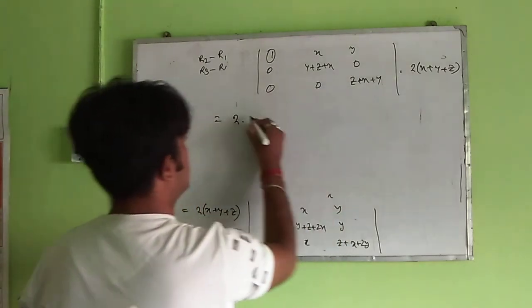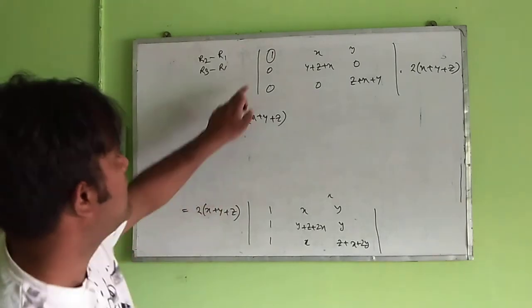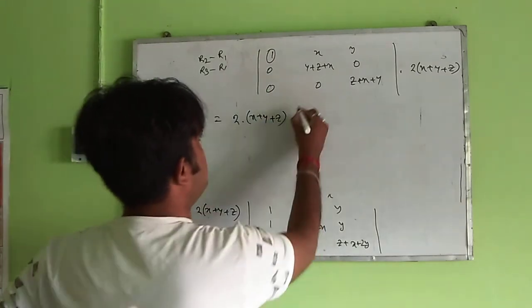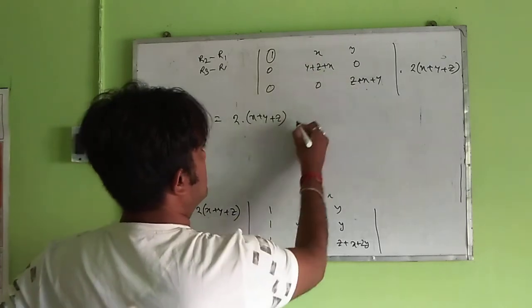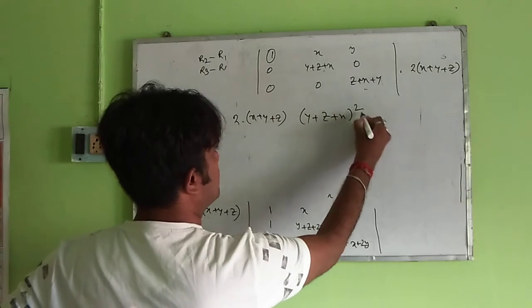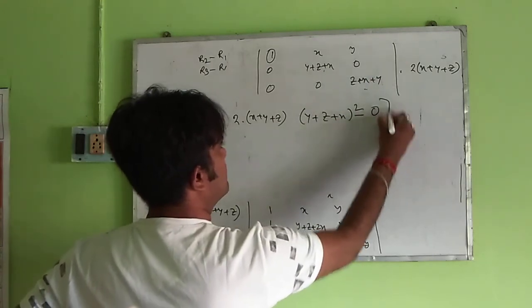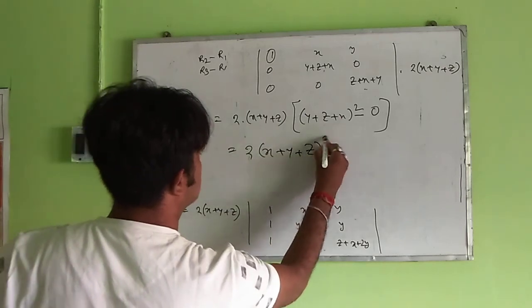With respect to 1. What happens? This will include with this. That is, y plus z plus x whole square minus 0. That is, 2 into x plus y plus z.